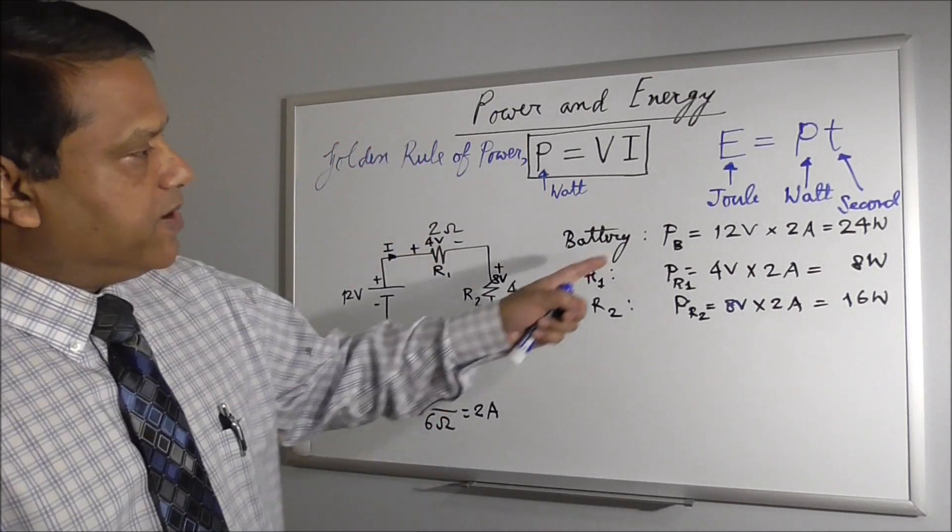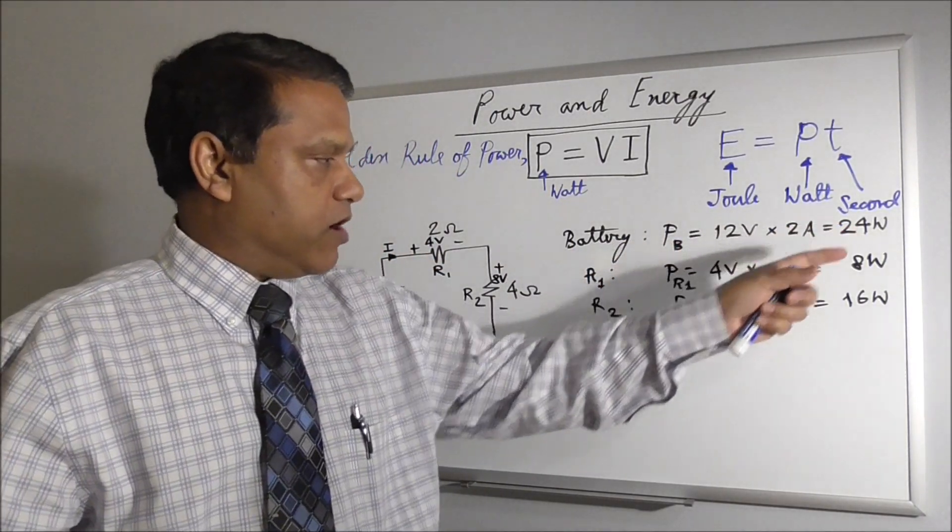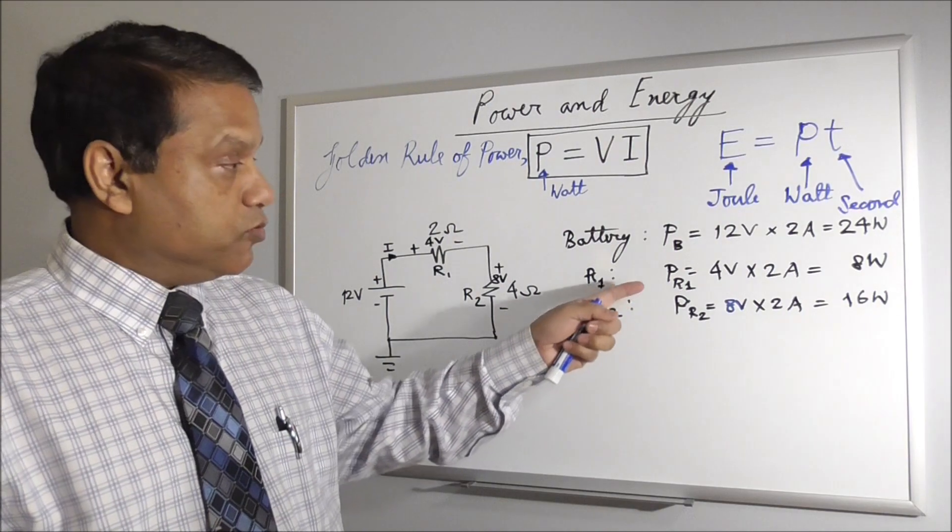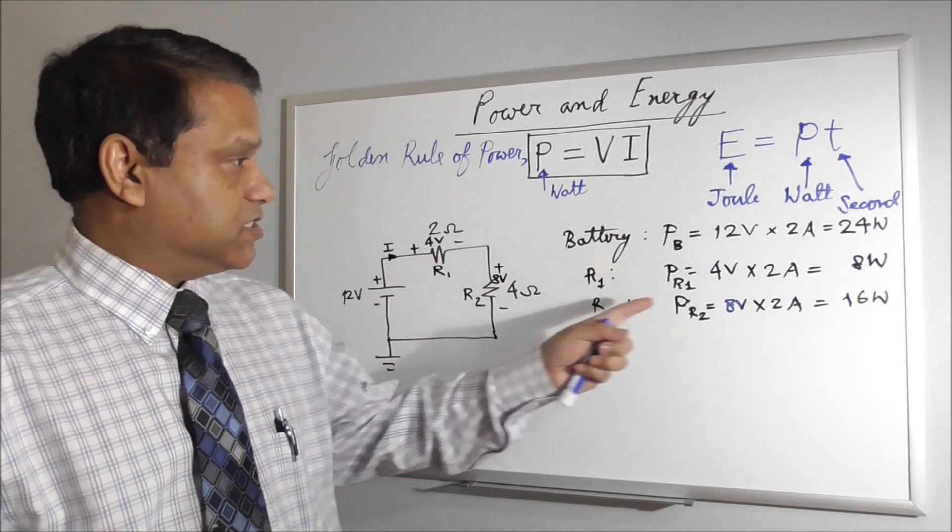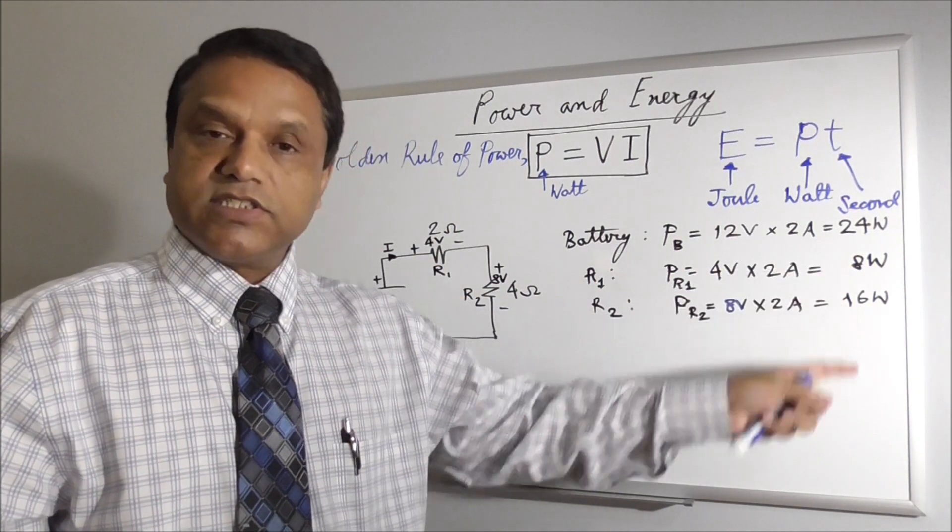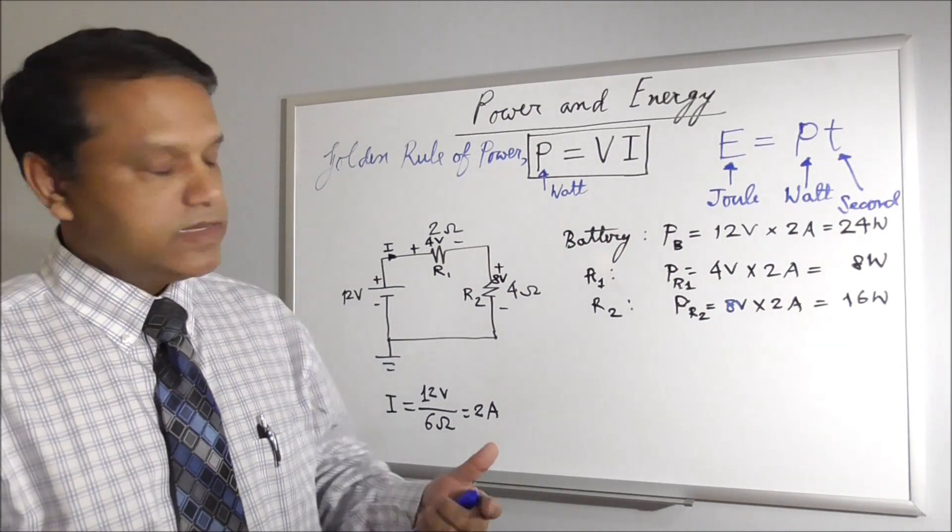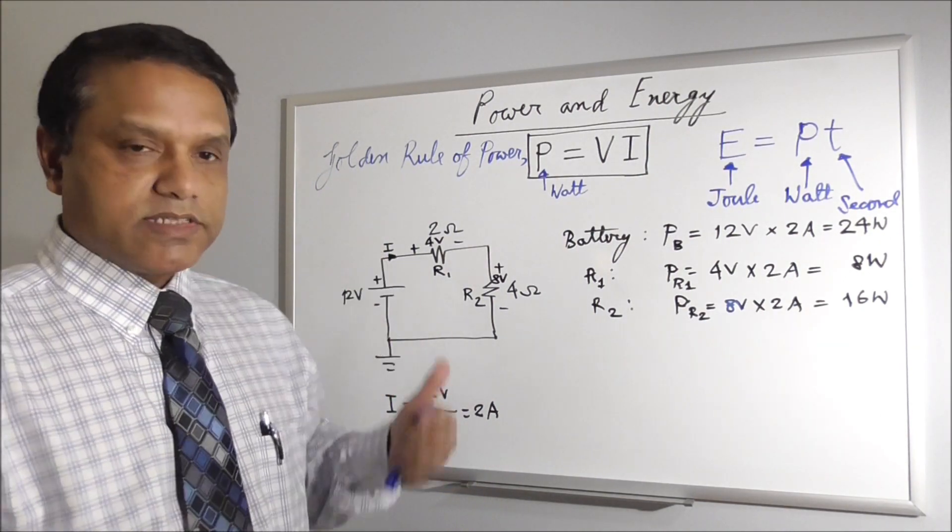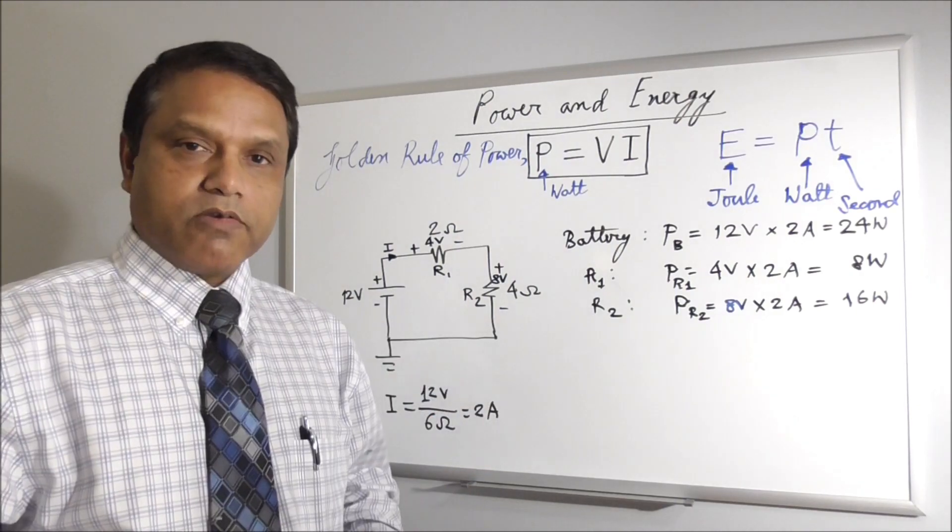And you see the power given out by the battery is 24 watt, and the power consumed by these two resistors is also 8 plus 16, 24 watt. So in a circuit, the amount of power supplied equals amount of power consumed.